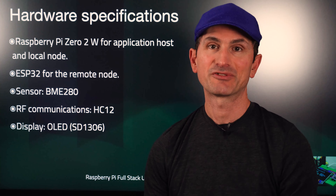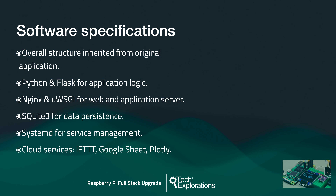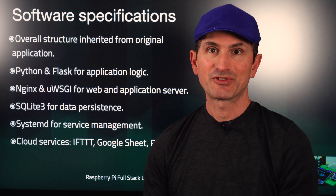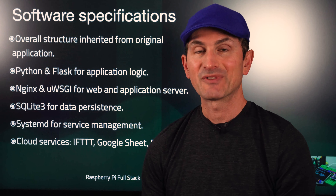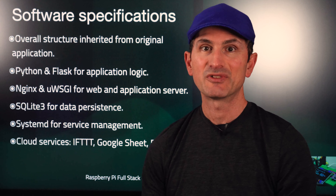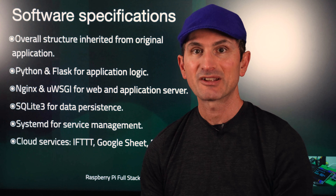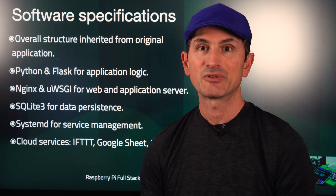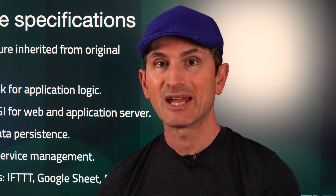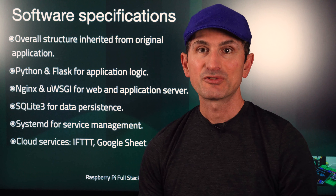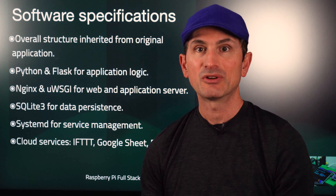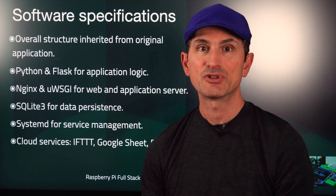In terms of software, in this upgrade project we'll use the same collection of technologies as you can see in this list. The organization of the software is also unchanged. The changes we'll introduce to the software are concentrated in the Python application files and configuration files. These changes reflect the use of the new hardware and take advantage of the new capabilities. For example, new code extracts environment data from the BME280 and shows it on the OLED. There's new code for the HC12 that replaces the code that drives the NRF24 modules originally. There's also new code to display the new information on the web interface and work with the more recent versions of Plotly.